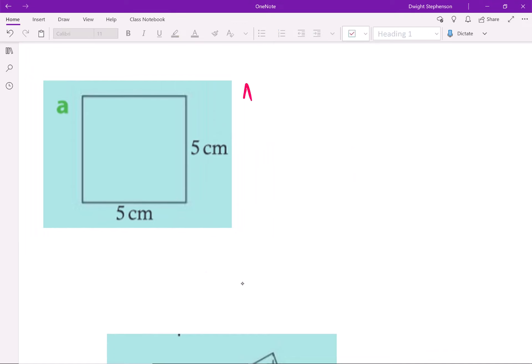you should know that the area of a square is basically the side squared. So in this case the side length is 5 and so it would just be 5 squared and that would give us 25.